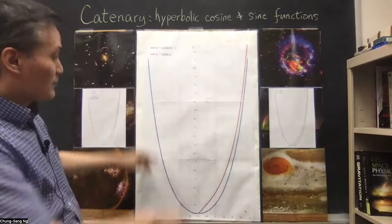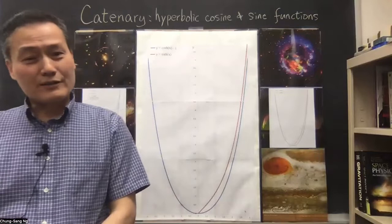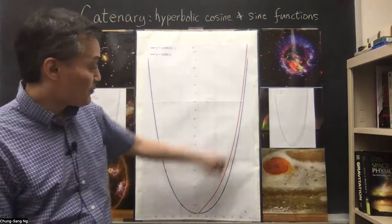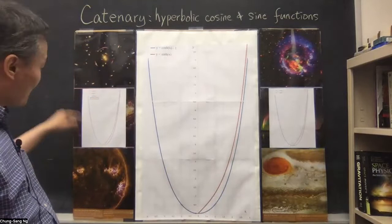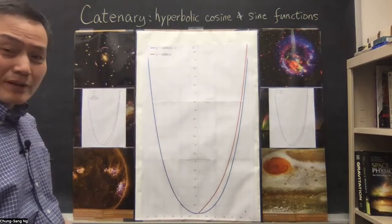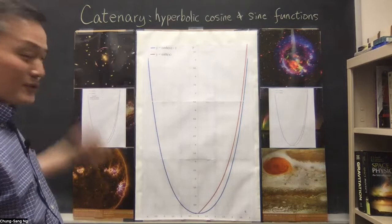I put them together on the same plot. The math says the shape of a catenary is given by the cosh function. I printed out this curve — the file is just this one, but I blew it up on a larger printout. I posted the file online so you can download it and play with the demonstration yourself.